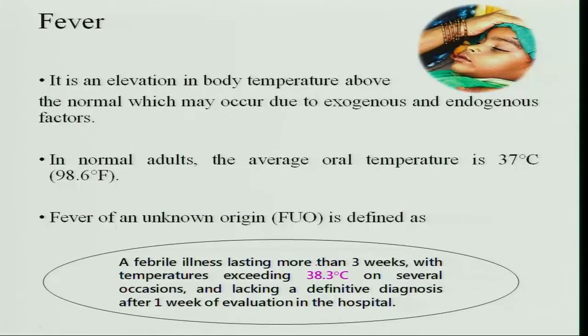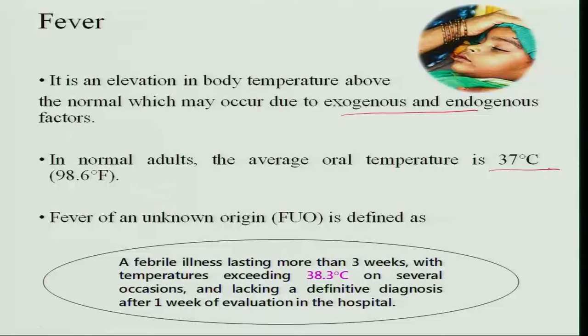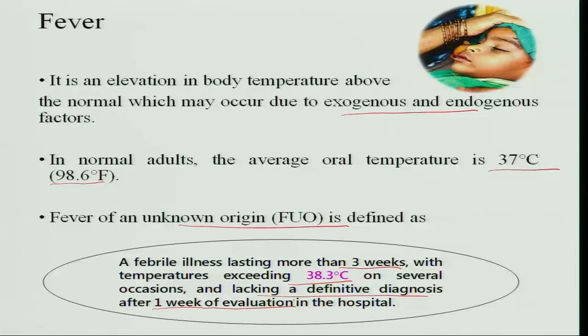Fever is an elevation in body temperature above normal, which can occur due to exogenous or endogenous factors — environmental factors or some disturbance going on within the body. In normal adults, the average oral temperature is 37 degrees centigrade, which is 98.6 degrees Fahrenheit. Fever of unknown origin is defined as a fever lasting more than 3 weeks with temperature exceeding 38.3 degrees centigrade, and after one week of evaluation you are still not able to diagnose it.